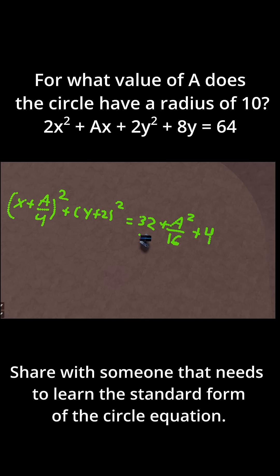So I'll have 32 + a²/16 + 4. I'll just write that as 36 + a²/16 = 100. Let's subtract 36 from both sides. This leaves me with a²/16 = 64. Then let's multiply both sides by 16. If I do that, I'll have a² = 64 times 16 is just 1024.